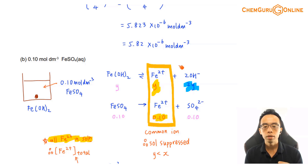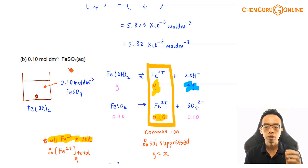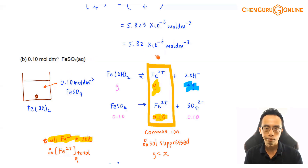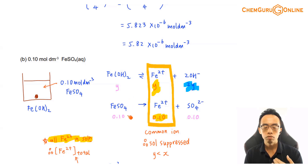So later, when we calculate the value for solubility, the answer in part B must be a smaller value than the answer in part A. We can actually use this concept to verify our answer.